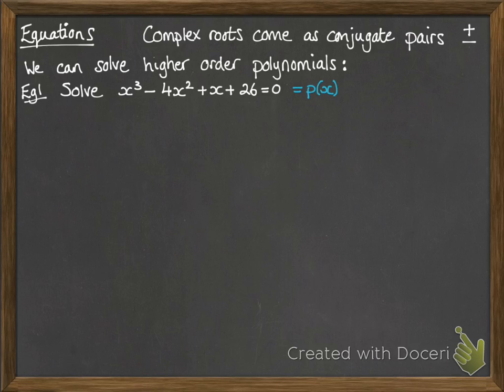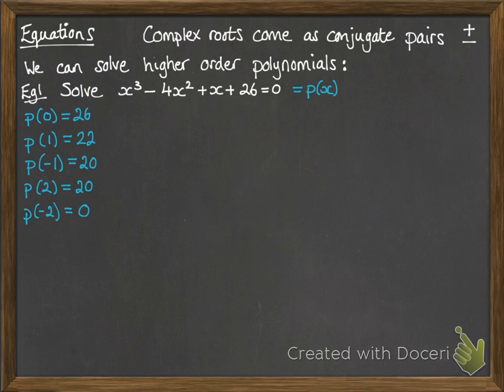So the factor theorem says that if we call this p of x for our polynomial, then we substitute in some values and see what will give us the answer of 0. If you put in a 0, that quite obviously comes to 26. p of 1 equals 22, p of minus 1 is 20, and we're just testing out some values in order. p of 2 is 20. The next one to try, p of minus 2, that one does come to 0.